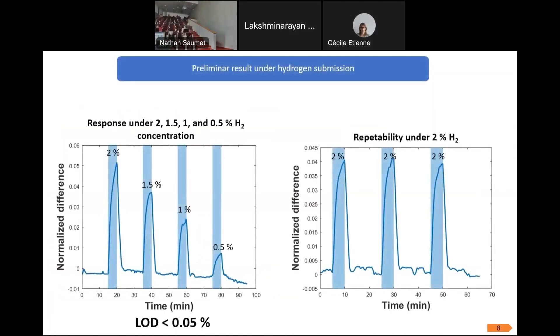Through the second setup measurement, we have achieved our first measurement under 2, 1.5, 1, and 0.5 percent hydrogen concentration. As you can see here, we have four different responses for the four different submissions of hydrogen, which can be considered as linear. And we have found a limit of detection of 0.05 percent. Also, we have achieved repeatability tests on our first sample. Our repeatability test under 2 percent was repeatable.